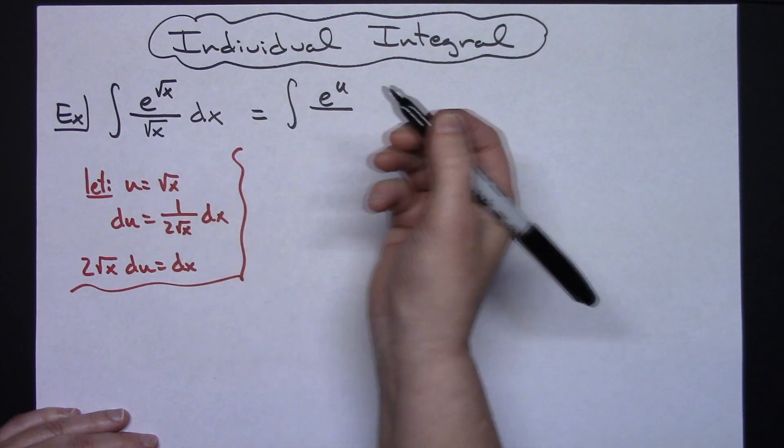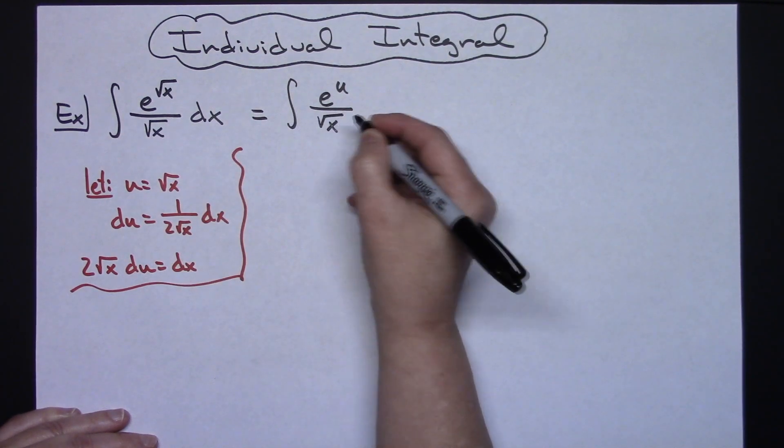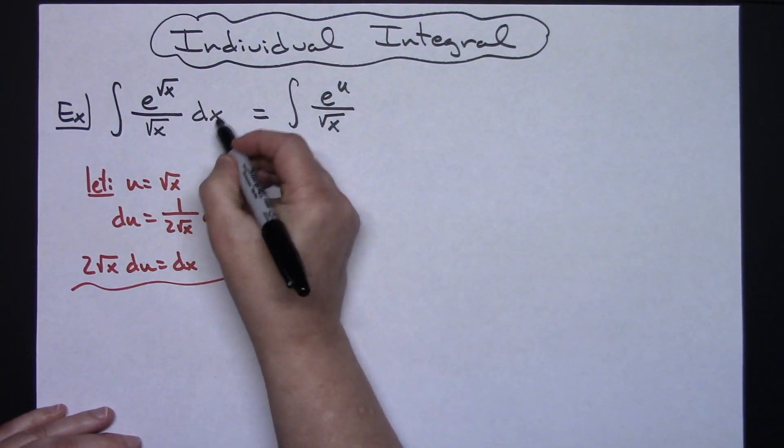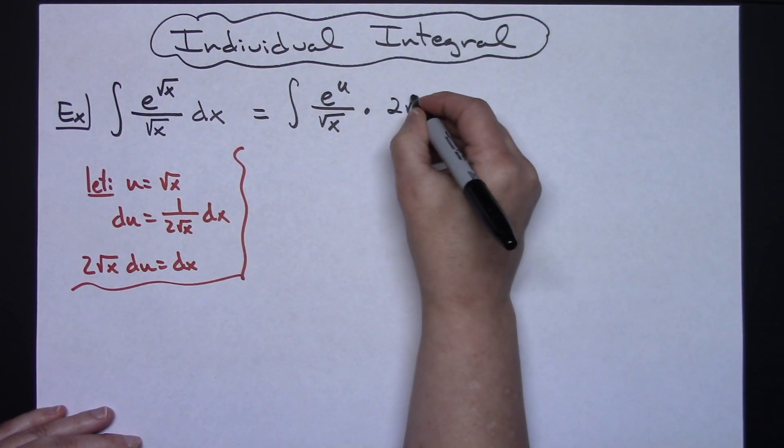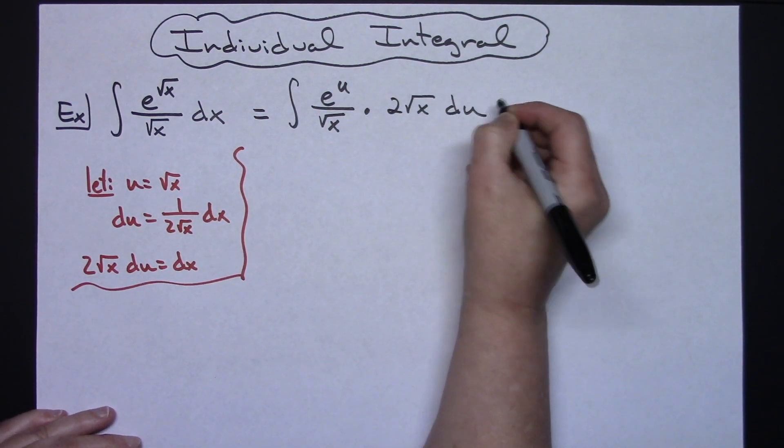Either way works, I'm just going to go ahead and leave that square root of x there and then taking this dx and substituting in there I'll have a 2 square root of x du.